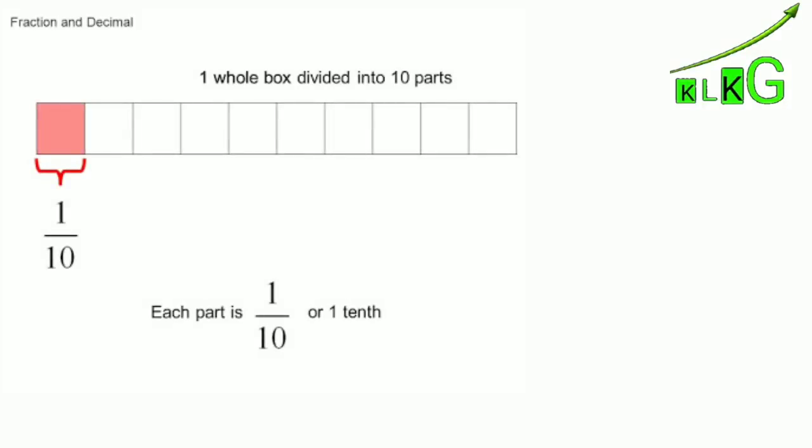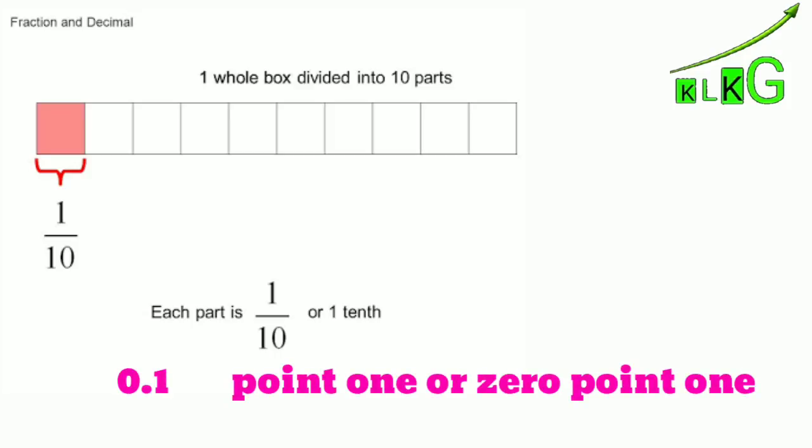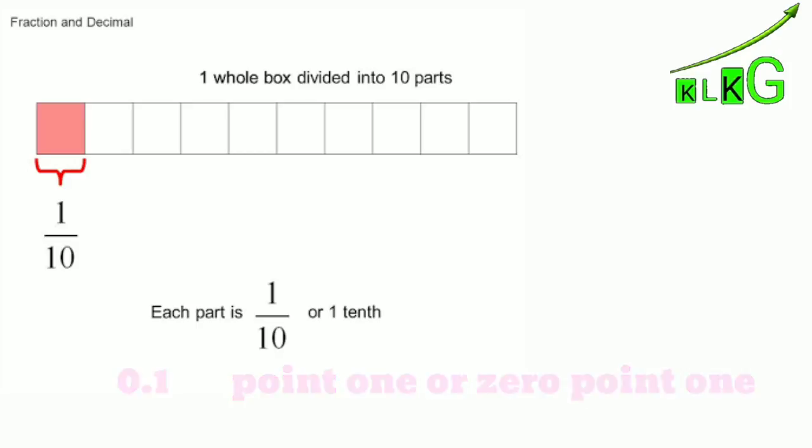The first point is how to write decimal numbers. For example, 1 by 10 means there are 10 total parts and we are talking about one part. So it will be written as 0.1, and it is read as zero point one.